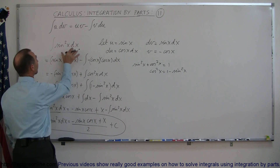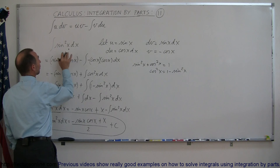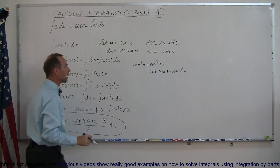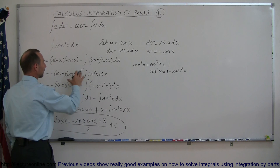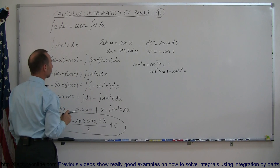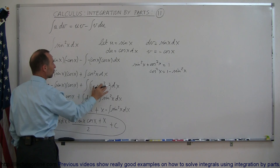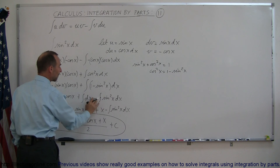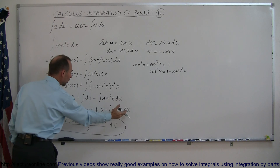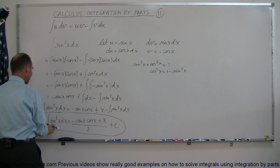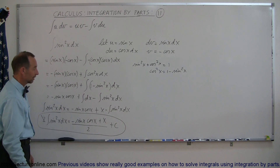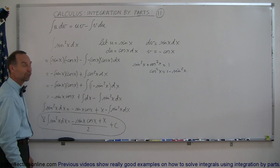So the first thing you do is use integration by parts, letting u equal sine of x and dv equal the other sine of x dx. Once you put that into the formula for integration by parts, you end up with a cosine squared of x. Use the trigonometric identity to replace it, and you end up with minus the integral of sine squared of x on the right side. Move it to the left side, add it, you get two of those, divide both sides by two, and there's your solution. Very tricky.